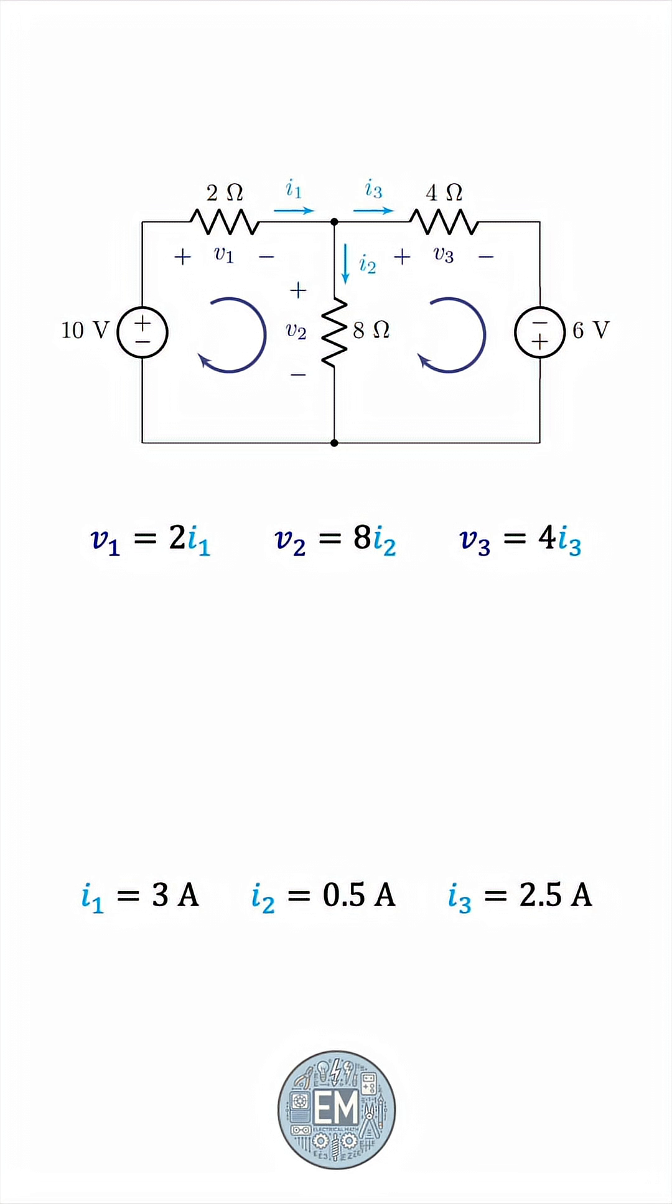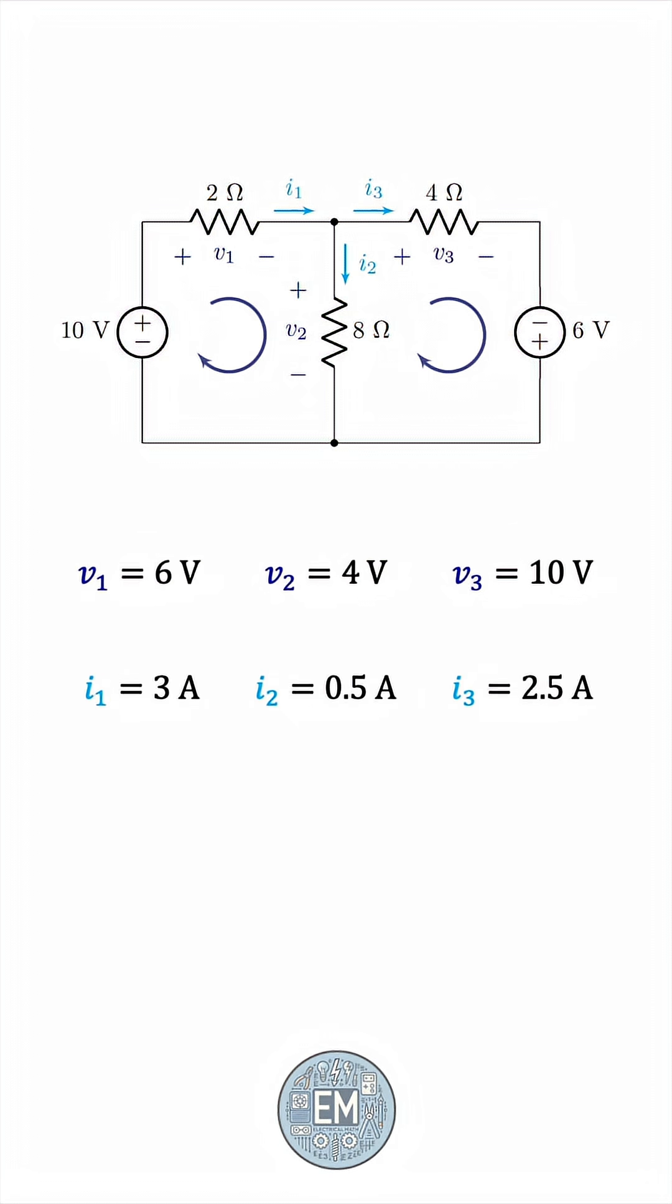With this, we can replace the three currents, so V1 will be 2 times 3, which is 6, V2 is 8 times 0.5, which is 4, and V3 is 4 times 2.5, which is 10 volts. We have successfully found all voltages and all currents in the circuit we started with.